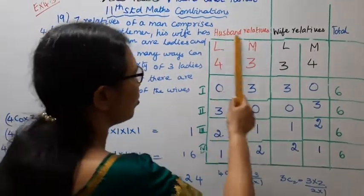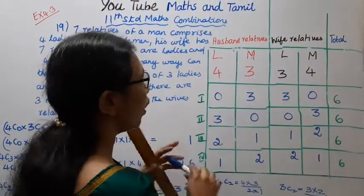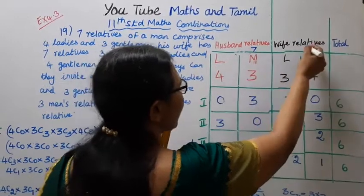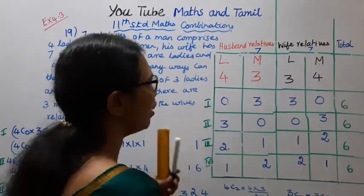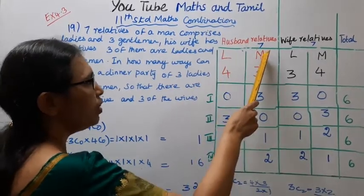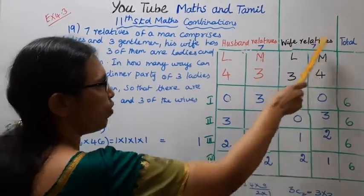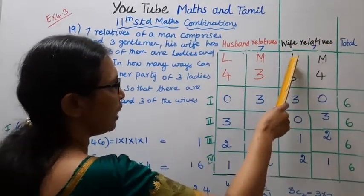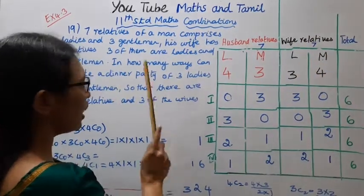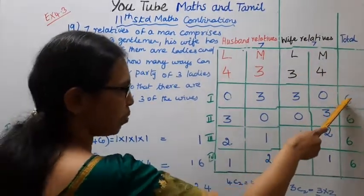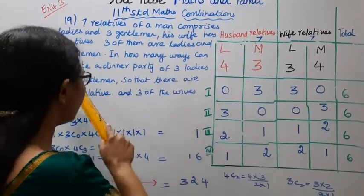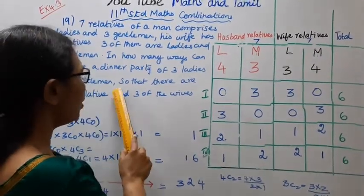Husband's relatives and wife's relatives. Here are 7 relatives and here are 7 relatives — that is different. Husband's relatives: ladies are 4, gentlemen are 3. Wife's relatives: ladies are 3, men are 4. For the dinner party we invite 6 — 3 ladies and 3 gentlemen. That is the condition: 3 from the husband's relatives, 3 from the wife's relatives.